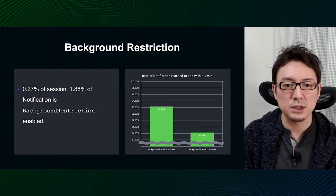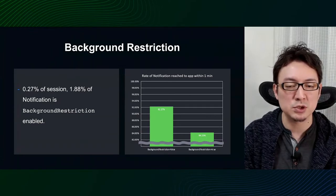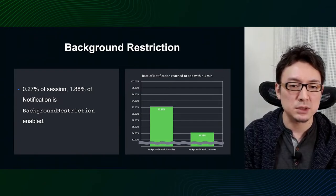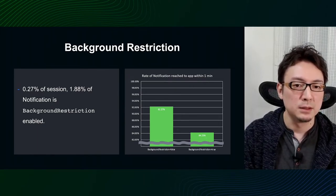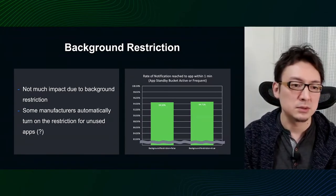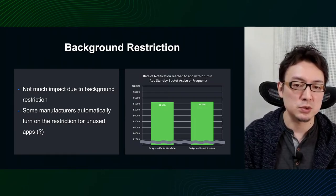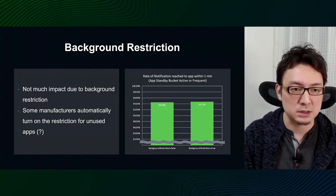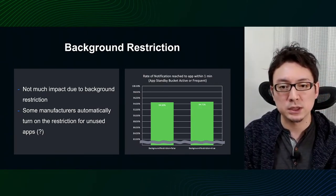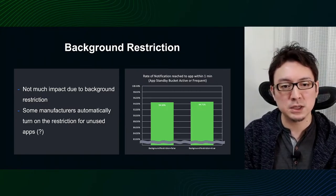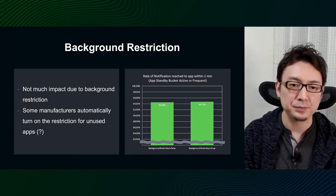The amount of affected notifications was as low as 0.27% for the session, but if we use the number of notifications as the denominator, we find that background restriction was true for 1.88% of all notifications. There is also a clear difference in the percentage of notifications that arrived within a minute. However, upon further investigation, we found this is a spurious correlation. If we narrow down the App Standby Bucket to only frequent users, we can see there is no difference in the ratio of notifications received within a minute, regardless of background restriction status. The rate of background restriction setting is uneven among some manufacturers, and looking at the GUI of the device in question, it seems there is a function to automatically turn on background restriction for apps that are not used very often.